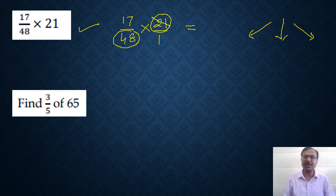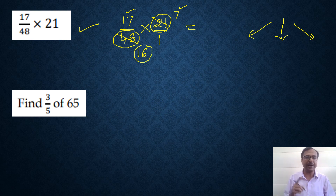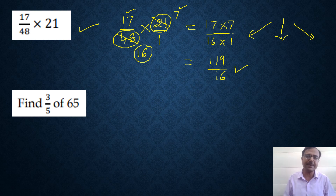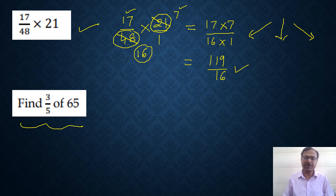Cancel 21 by 3 to get 7, and cancel 48 by 3 to get 16. Now in the numerator you have 17 and 7, and in the denominator you have 16 and 1. There are no other common factors, so multiply: 17 times 7 is 119, and 16 times 1 is 16. So the answer is 119 upon 16. You can also convert that into a mixed number if required.